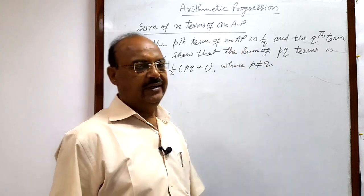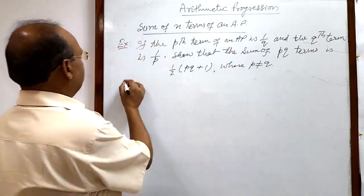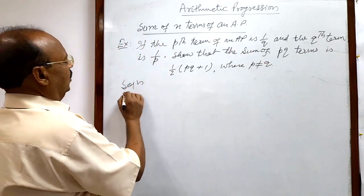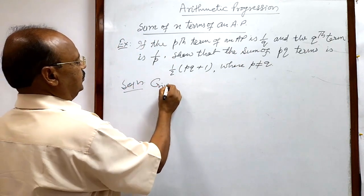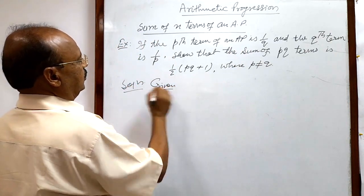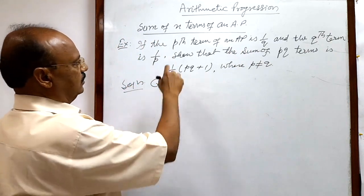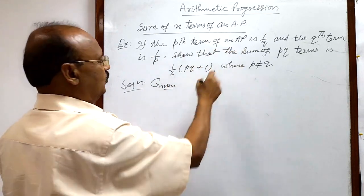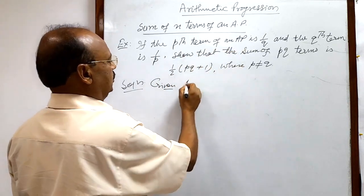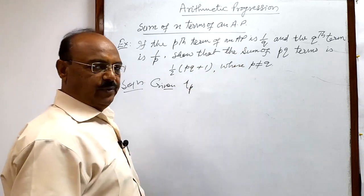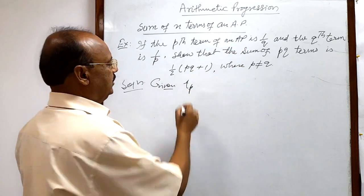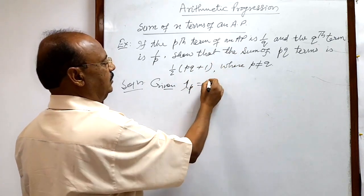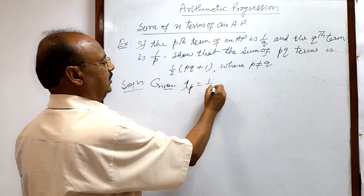The question is very interesting. Let us see the solution. What is given here? Given: the pth term of an AP is 1/q. The pth term is written as t_p, so t_p is equal to 1/q.